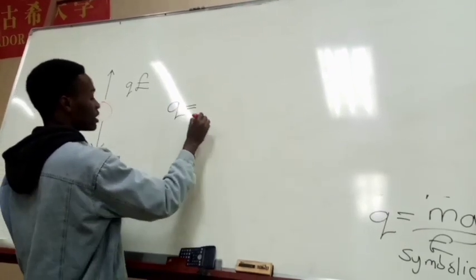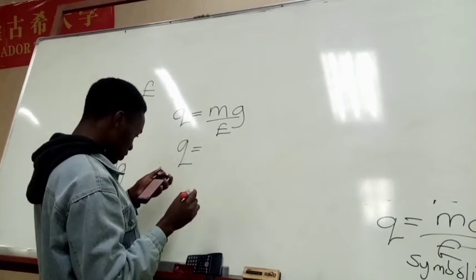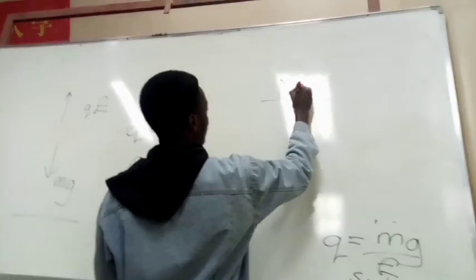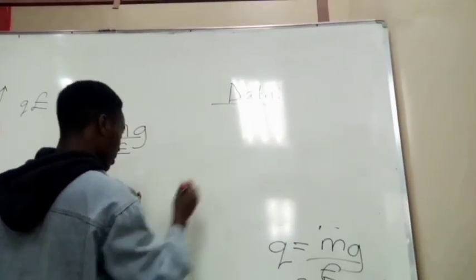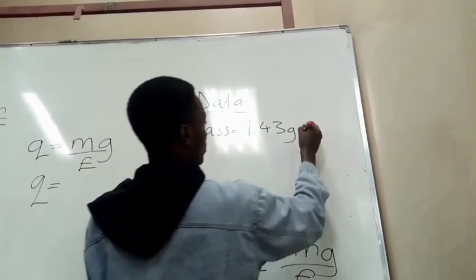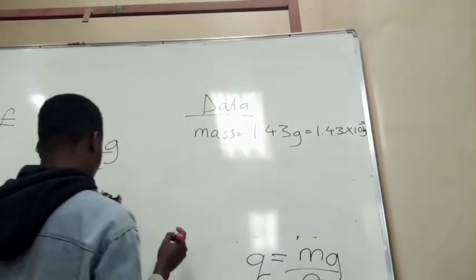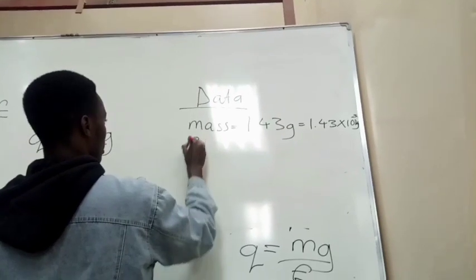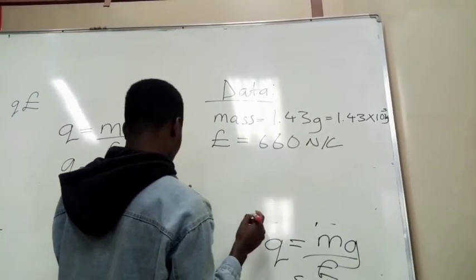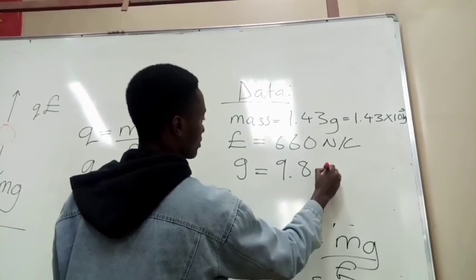So we are having the charge being equal to mass times the gravity over the electric field. We should have done this in the first place, but whenever you are solving a physics question, you start with your data. So we have our data there. We have our mass being equal to 1.43 grams, which is equal to 1.43 times 10 to the power of negative 3 kilograms. And also, the electric field, which is equal to 660 newtons per coulomb. And that's all we need because we already know our gravity is 9.8 meters per second squared.